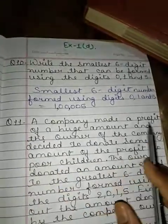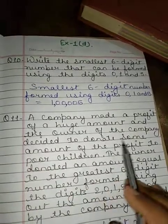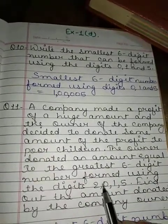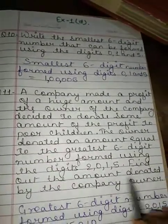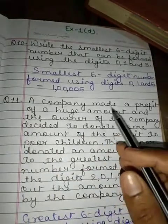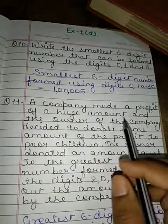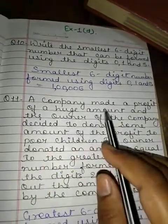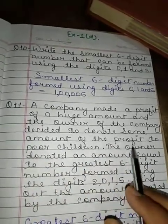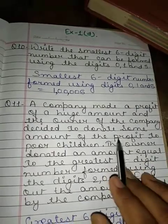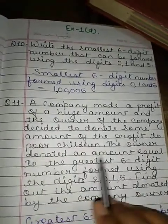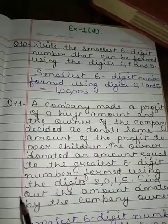Question number 11: A company made a profit of a huge amount and the owner of the company decided to donate some amount of the profit to poor children. The owner donated an amount equal to the greatest 6-digit number formed using the digits 2, 0, 1, 5. So find out the amount donated by the company owner. Question ka matlab ye hai ki ek company hai uska profit joh hai — joh owner hai us company ka, he decided to donate some amount of the profit to poor children. The owner donated an amount equal to the greatest 6-digit number formed using digits 2, 0, 1, 5.